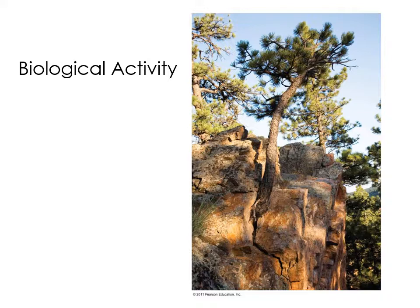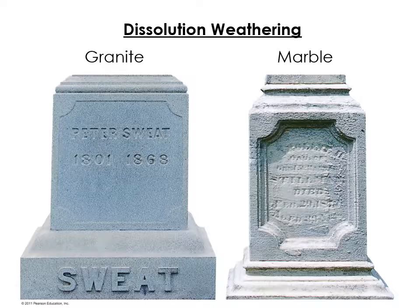Another way we can weather things physically is biological activity. Tree roots can grow down into cracks in rock and wedge them apart, eventually causing rocks to fall off. Animals digging and other activities also break apart rock mechanically.